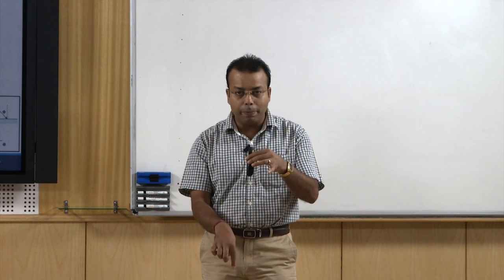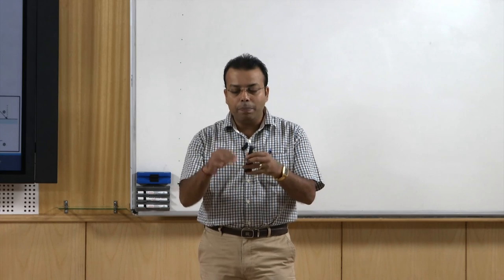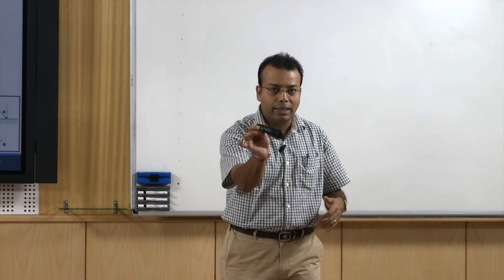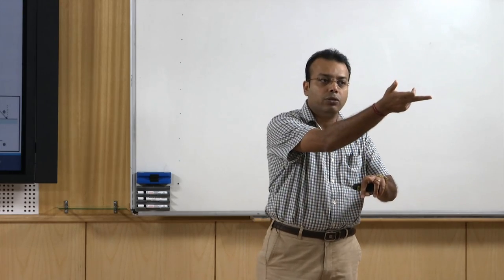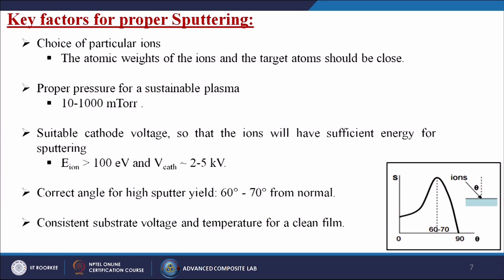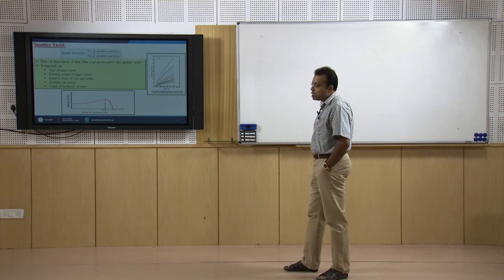If I simply drop this pointer, it will hit the material directly — the molecules will simply go inside or be closely packed. But if I throw it at some angle, it will hit at some incidental angle, and some molecules from the target will come and deposit onto the substrate. When following 90 degrees — that is, when the incidental angle is perpendicular — you get a totally zero value. But if you follow 60 to 70 degrees, your efficiency is higher, meaning the bombardment and release of atoms from the target is higher. That is known as the sputter yield.